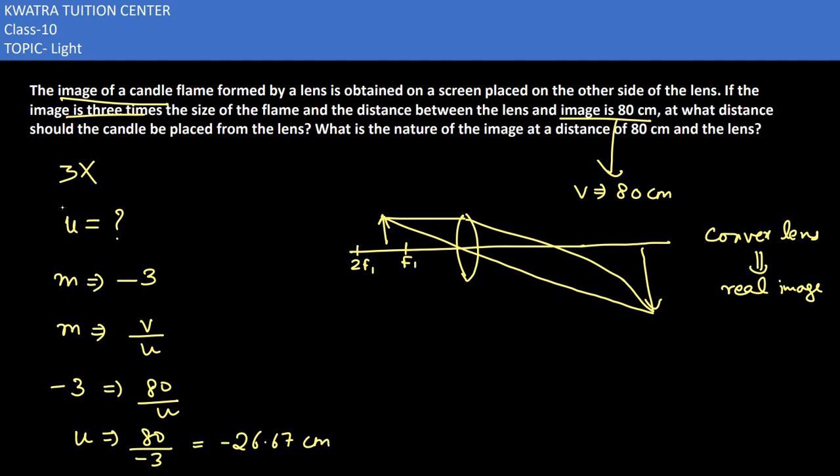Now to verify, use lens formula, which is 1 over F equals 1 over V minus 1 over U. So 1 over V is 1/80, and for U we put minus 80 over 3. The minus signs cancel to become plus.